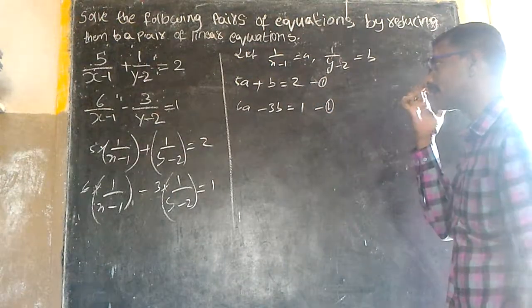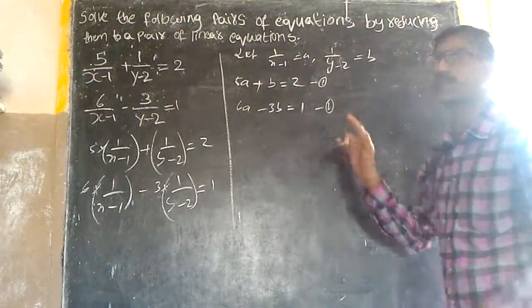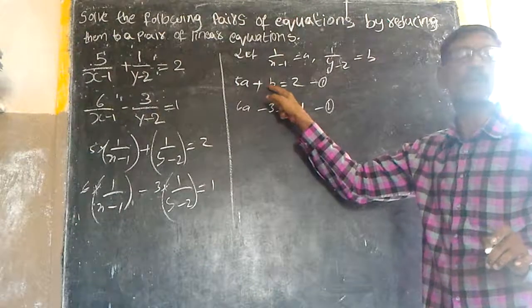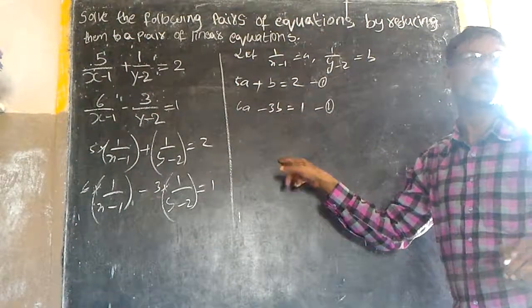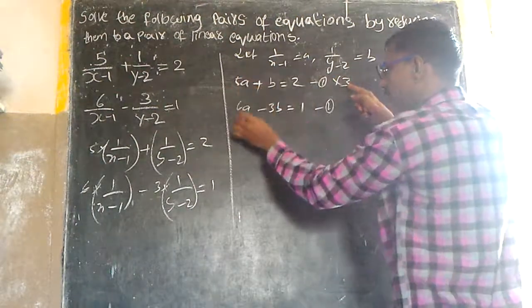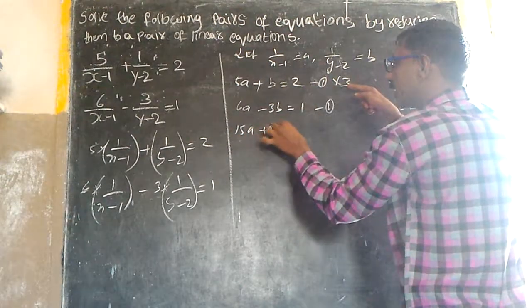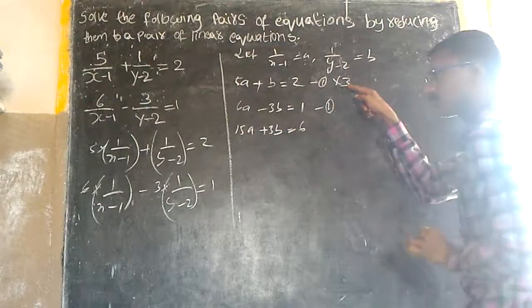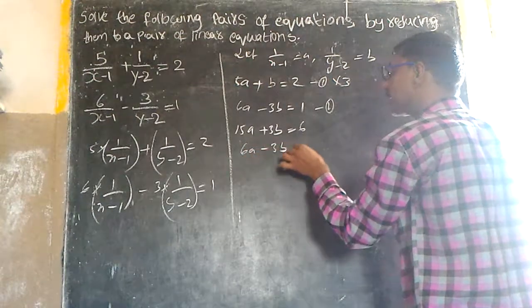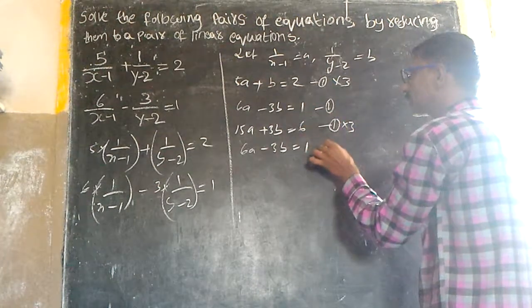Now we use the elimination method. Multiply equation 1 by 3: 3 into 5a gives 15a, 3 into b gives 3b, and 3 into 2 gives 6. So the modified equation 1 is 15a plus 3b is equal to 6. Equation 2 is 6a minus 3b is equal to 1.